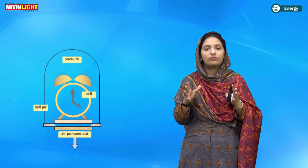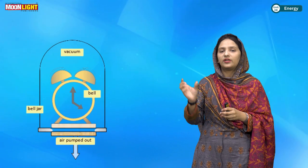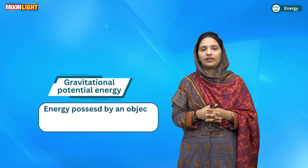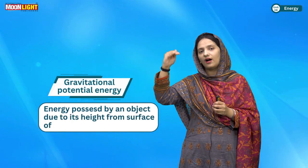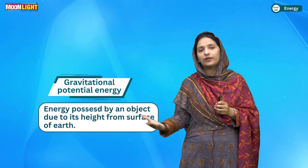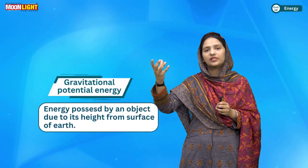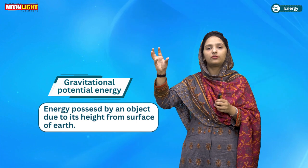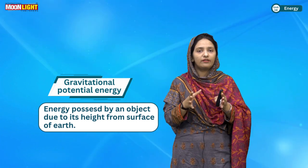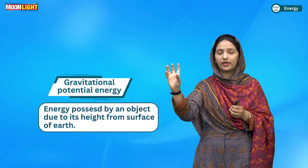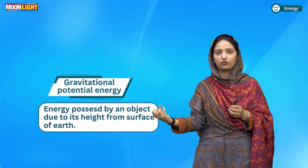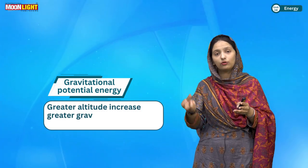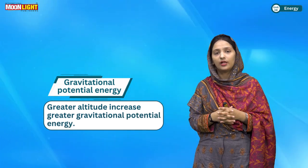The next form of energy is gravitational potential energy. 'Gravitational' because it is due to gravity, and 'potential' is related to height. The movement of particles at a specific height is called gravitational potential energy. It is called gravitational because the Earth exerts force on its particles, and the material continuously experiences this. The greater the height of the material, the higher the gravitational potential energy.